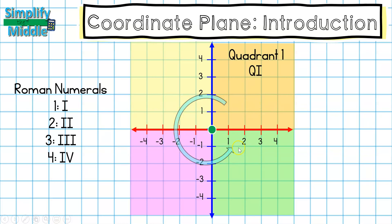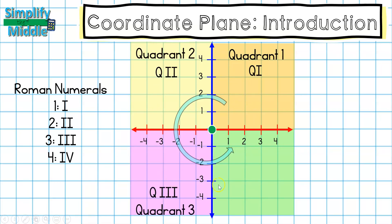There's a big arch with an arrow showing the direction to go — it looks like the letter C from 'coordinate plane.' So every time we're labeling our quadrants, we start where it's positive-positive and go around in the letter C. That way we'll always get it correct: quadrant one, then quadrant two, quadrant three, and quadrant four.